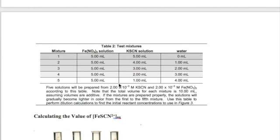This table lists five mixtures, each of which contains the two reactants, and once mixed, will produce the reddish iron thiocyanate complex ion product.